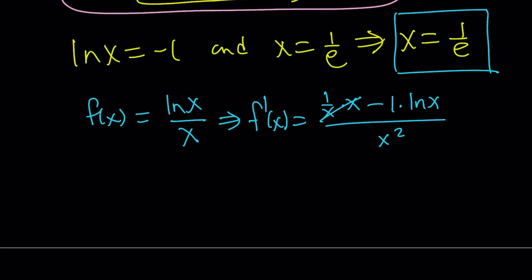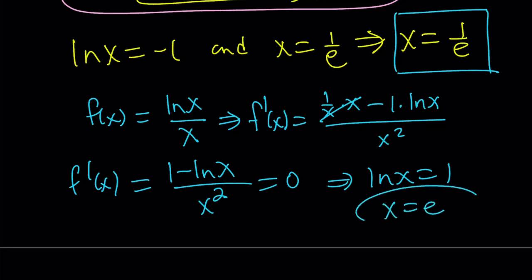Easy, right? And this becomes 1 minus ln x over x squared. And if you set it equal to 0, you're going to find ln x equals 1 and x equals e as our critical point.